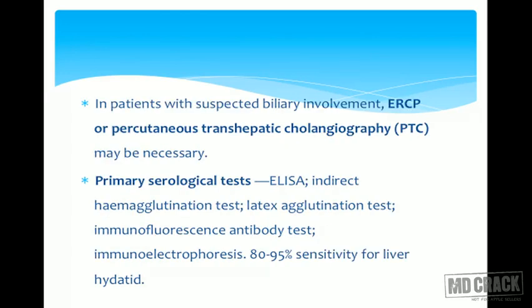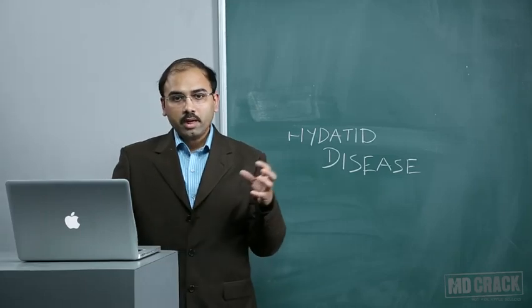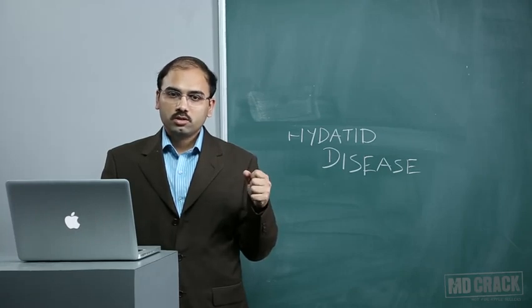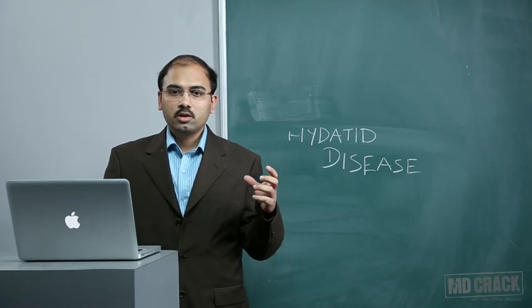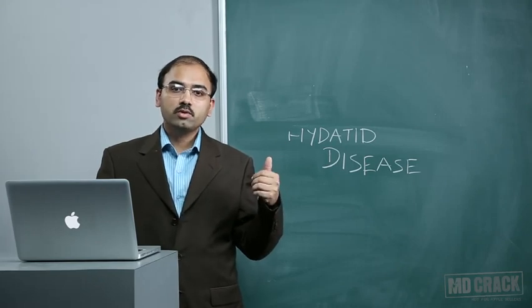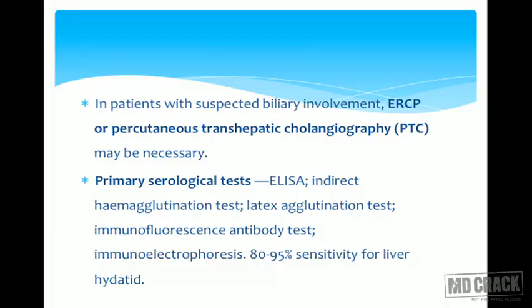In patients with suspected biliary involvement, ERCP or percutaneous transhepatic cholangiography (PTC) may be necessary. During management, dye can be injected inside the cyst to reveal any communication with biliary radicals, which if present would require treatment to prevent bile leak. Primary serological tests include ELISA, indirect hemagglutination test, latex agglutination test, immunofluorescence antibody tests, and immunoelectrophoresis, which has 80–95% sensitivity for liver hydatid.